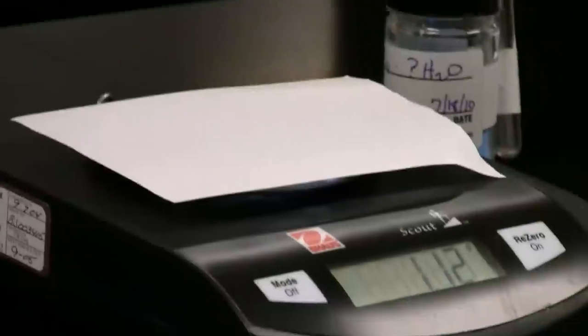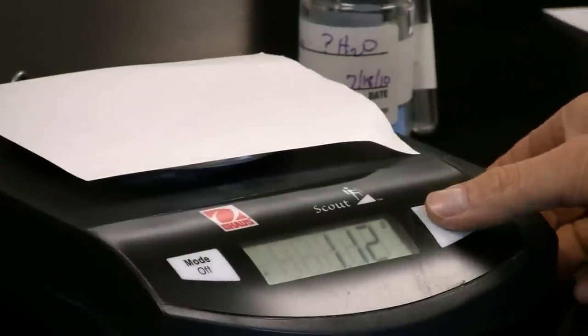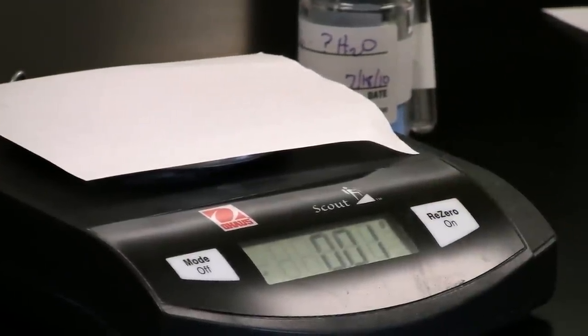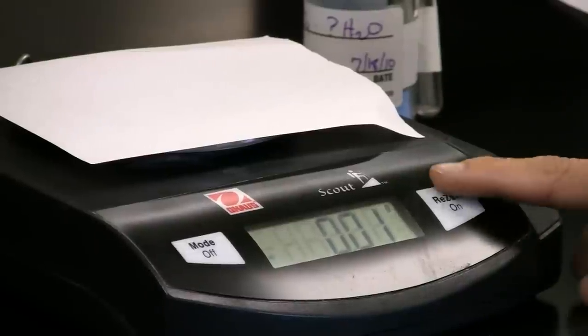At this point, hit the re-zero button to zero out the mass of the paper. Add your sample and record your measurement.